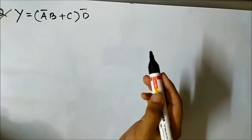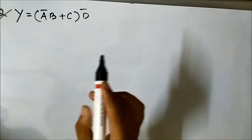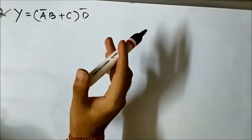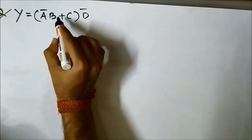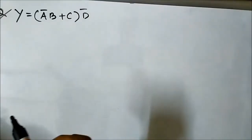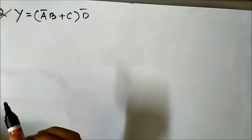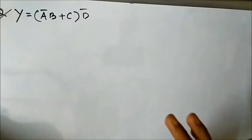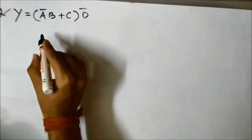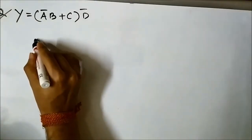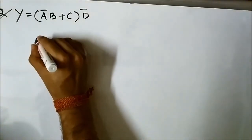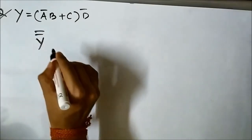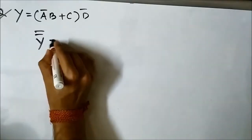Here, if we have to implement this Boolean expression using NAND gates, the only problem is this OR symbol. So we have to modify the given Boolean expression using this double complement rule into AND form, product form. Let us double complement it.